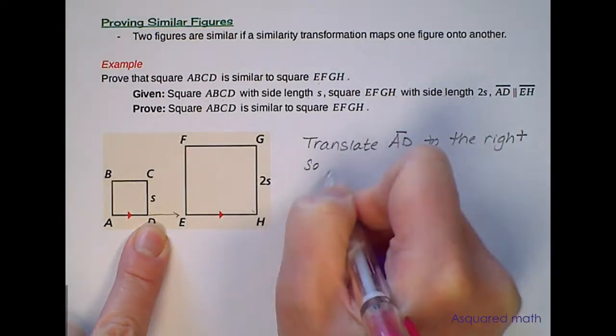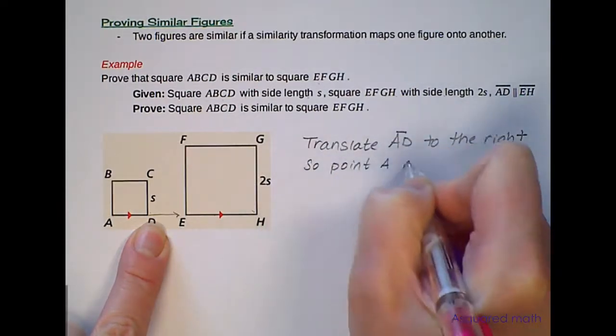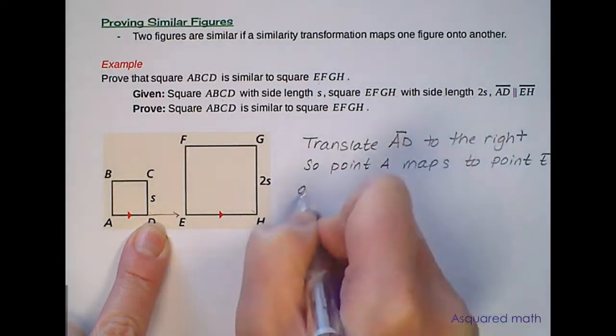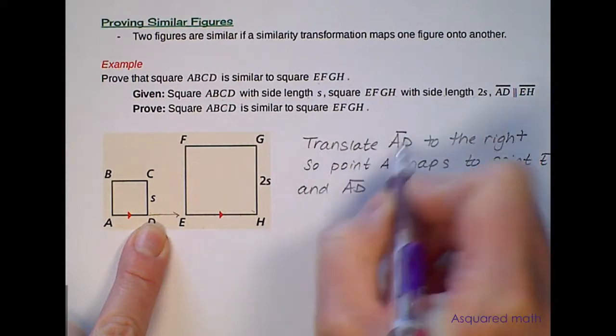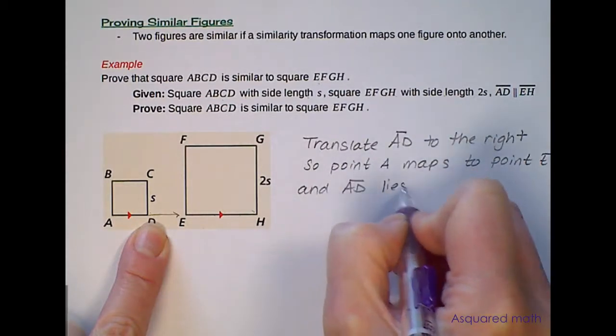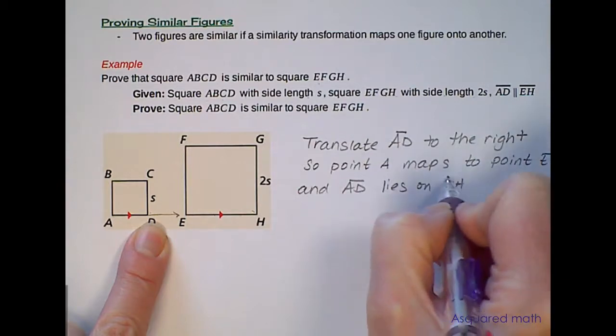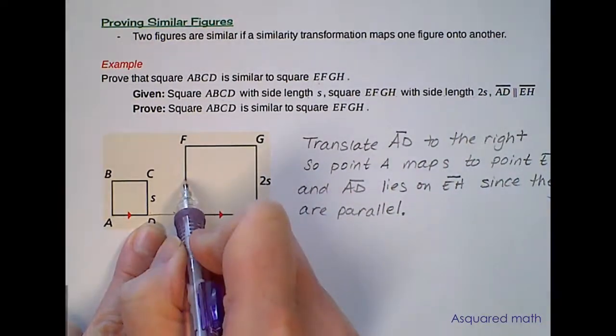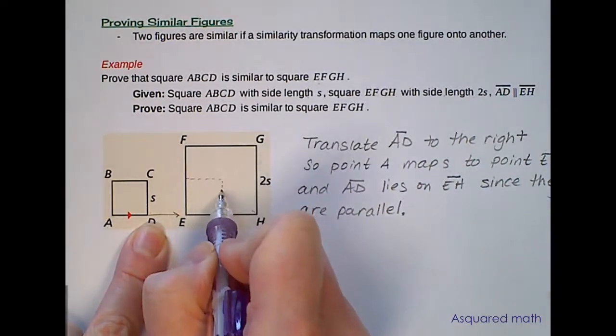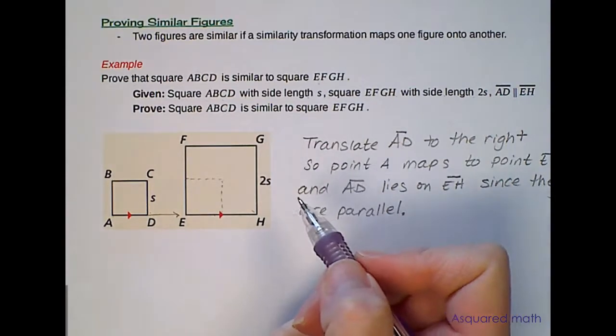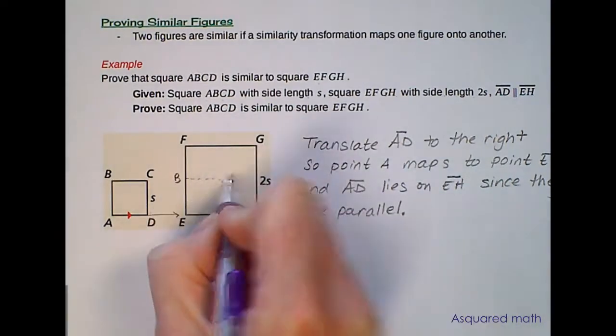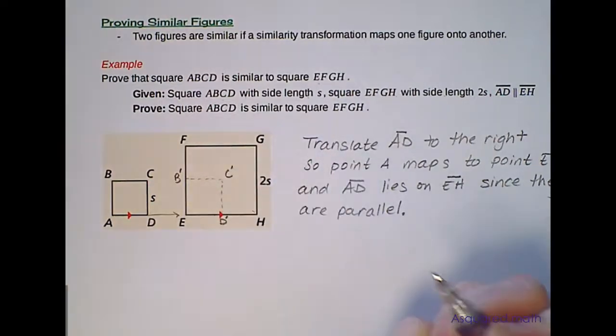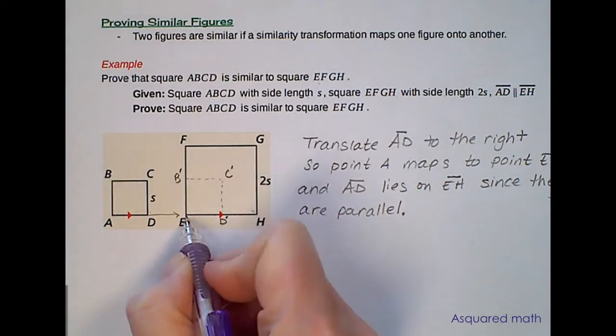So point A maps to point E and line segment AD lies on line segment EH since they are parallel. So we will have then, once we translate that over, we will have this figure inside and we will have point B, C, D, or B prime, C prime, D prime and E, point E, we will keep and we will get rid of that A.